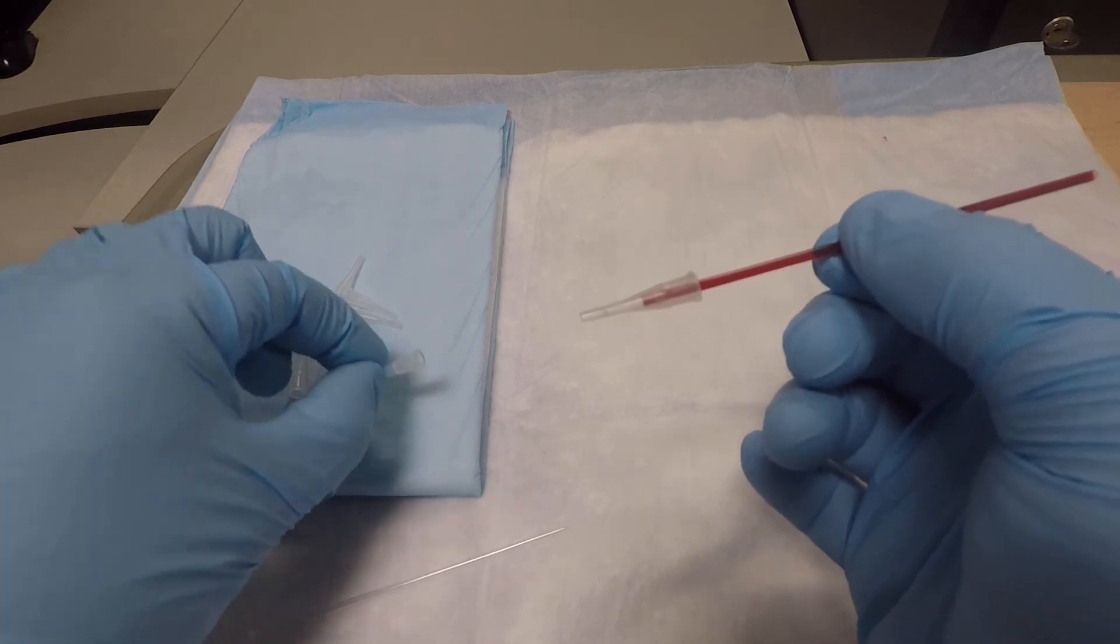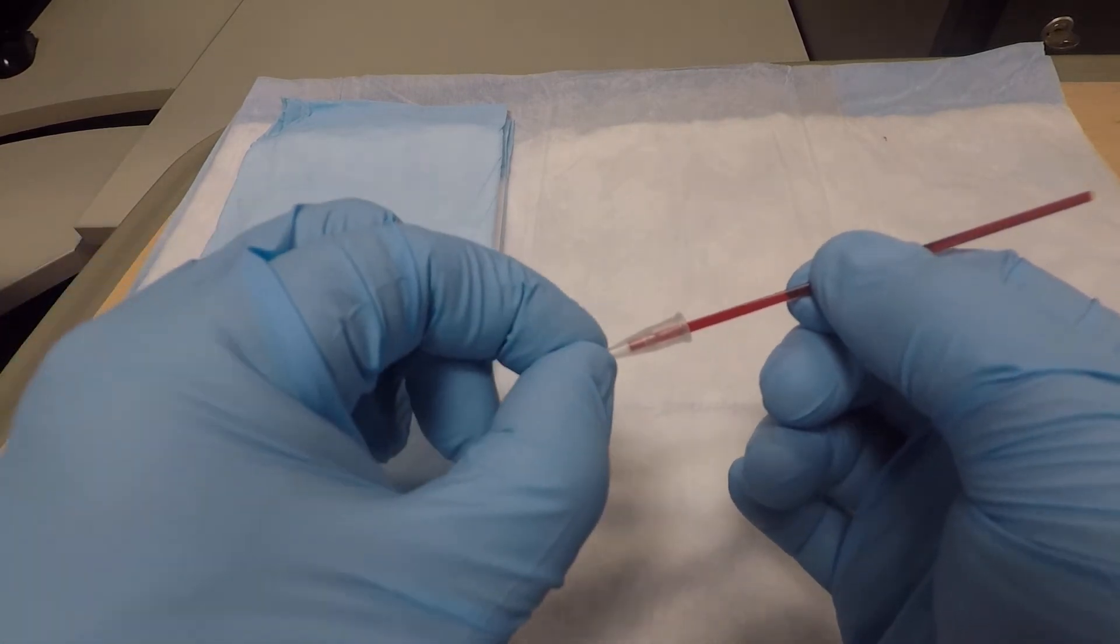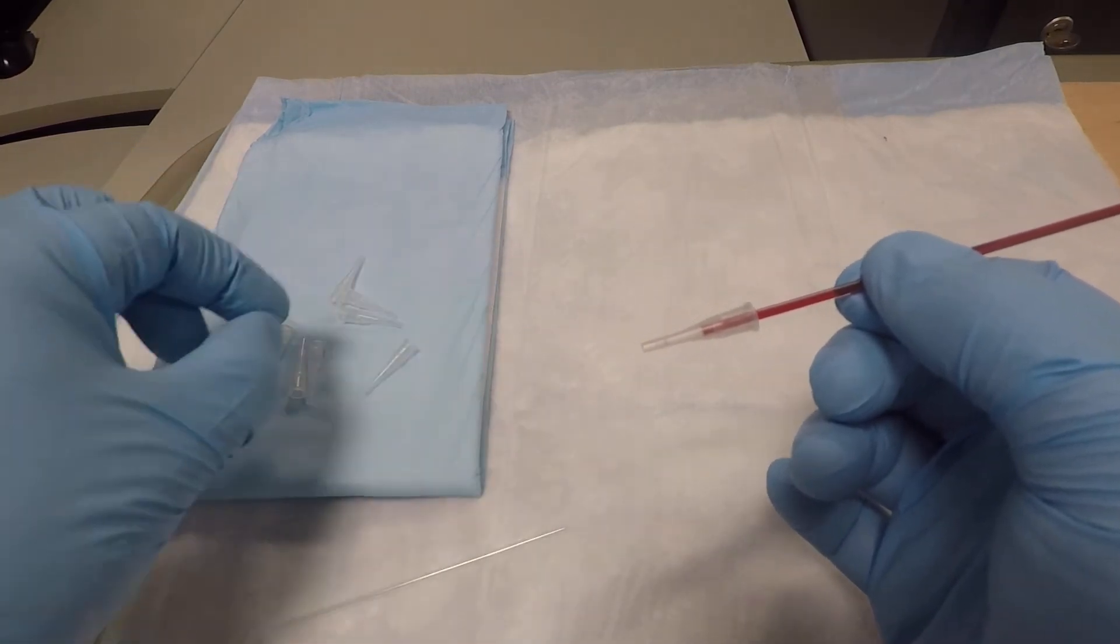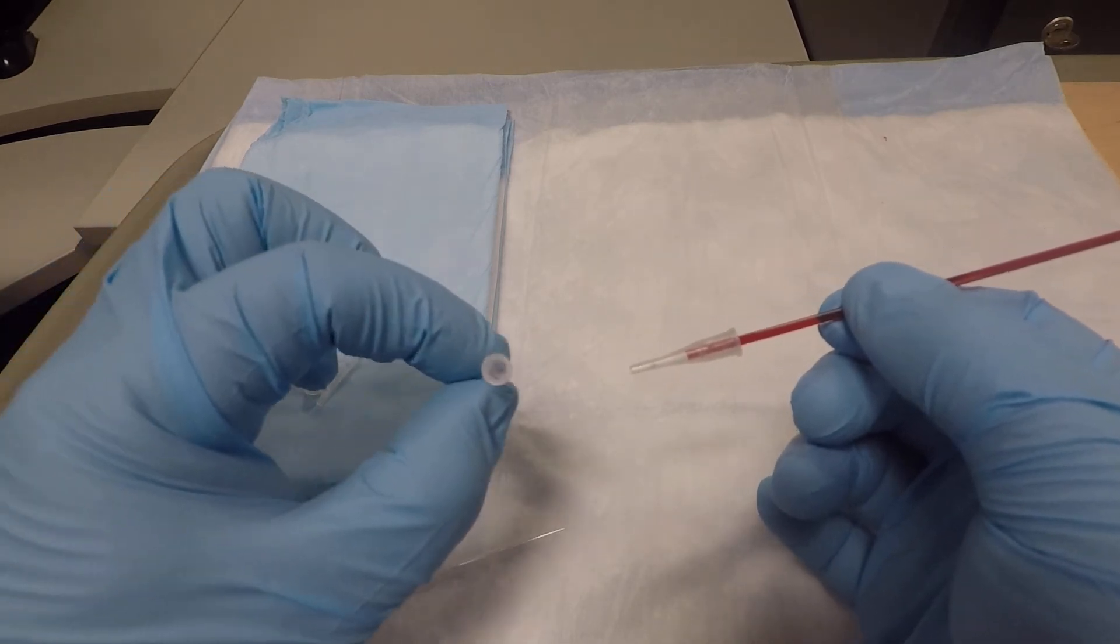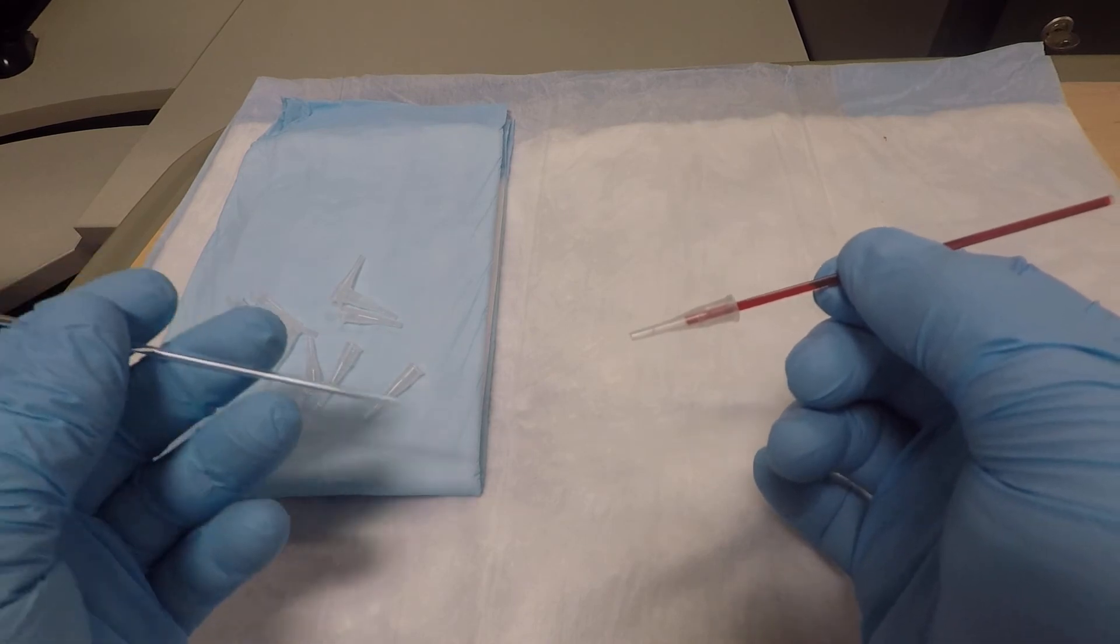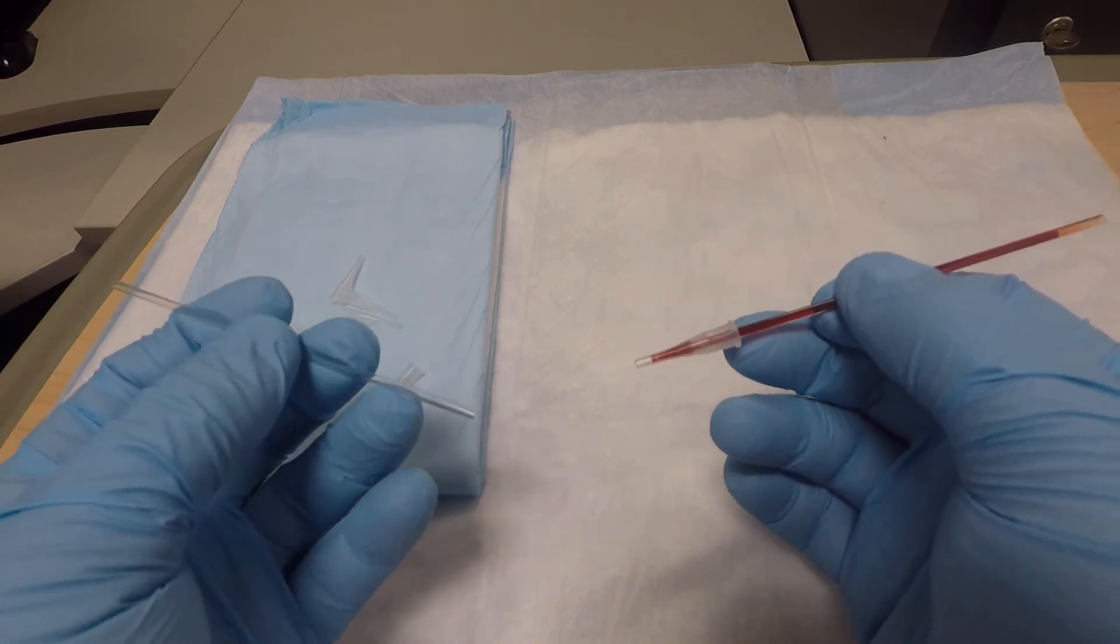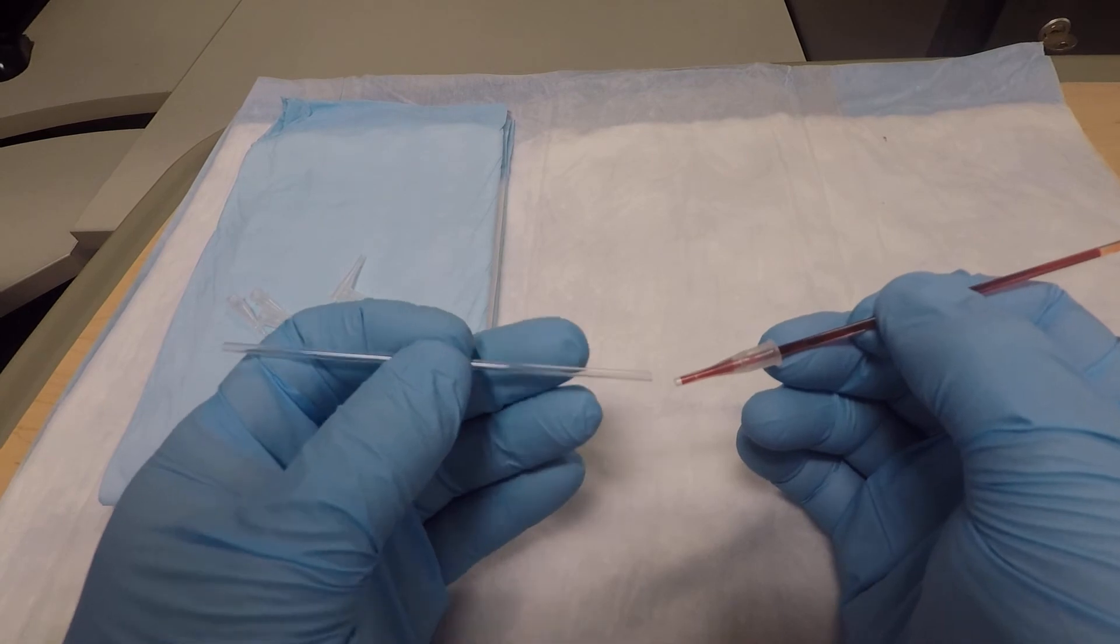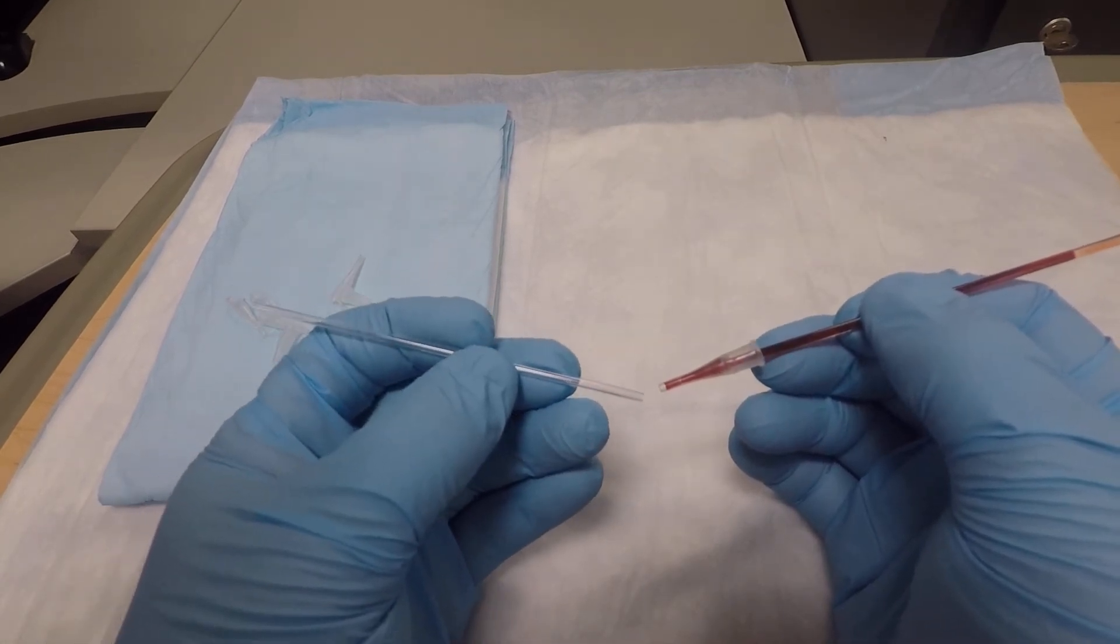First, take your clot catcher and slide it over. As you can see, it fits very well and has a little filter in the bottom. Then you'll transfer it down and you'll see it go down. Now the hard part: transferring it.